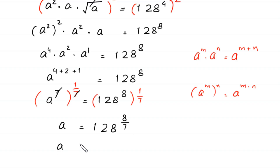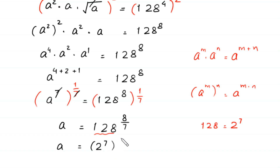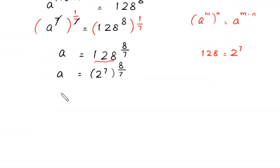Next, a is equal to 128 to the power 8/7. This 128 is equal to 2 to the power 7, so we replace 128 with 2 to the power 7: (2^7) to the power 8/7. By using the power rule, we multiply power 7 by power 8/7 — this 7 cancels out with this 7 — and on the right side we are left with 2 to the power 8.